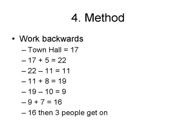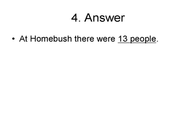And remember, at Strathfield, there were three people who got on, so I have to do the opposite — not add, I need to subtract. Sixteen minus three equals 13. So there we have it: at Homebush, there were 13 people on that bus. Remember, when working backwards, start at the end point and reverse or swap the operator — so a negative becomes a positive, or a positive becomes a negative. Good luck with your backwards research.